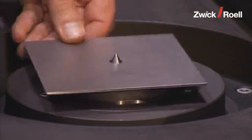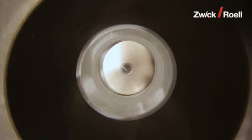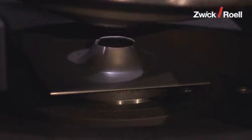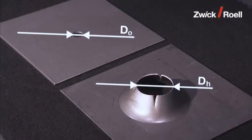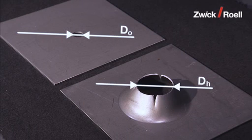In the hole expansion test, a hole in a metal strip is expanded while the outer edge of the strip is held in place until a crack develops. Specimen preparation can be performed with the blanking tool. Following the test, the diameter of the fracture provides information on the ductility of the sheet metal.